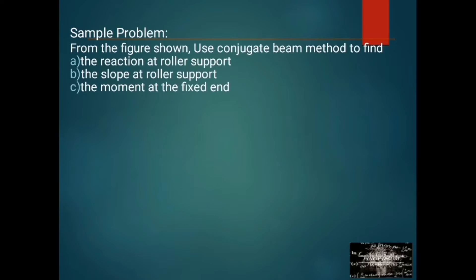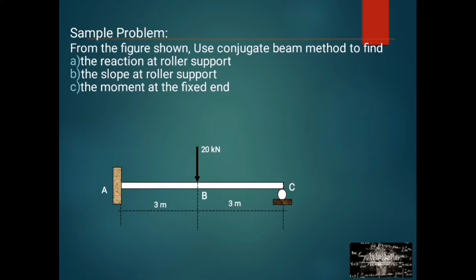For the sample problem: from the figure shown, use the conjugate beam method to find the reaction at the roller support, the slope at the roller support, and the moment at the fixed end. We have a propped beam subjected to 20 kN at point B, with EI constant.